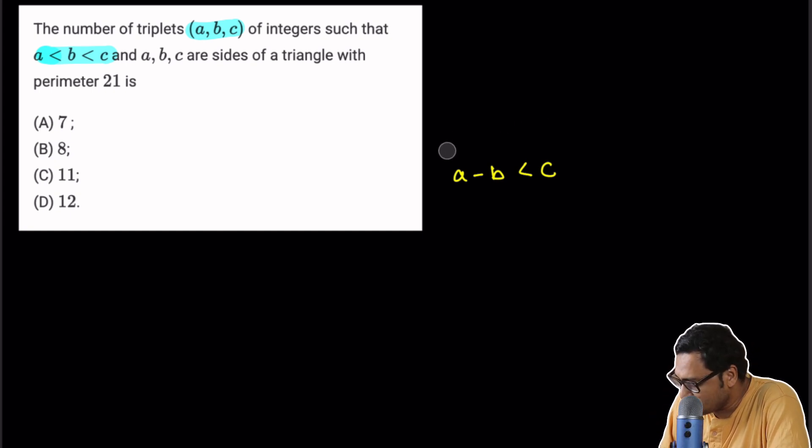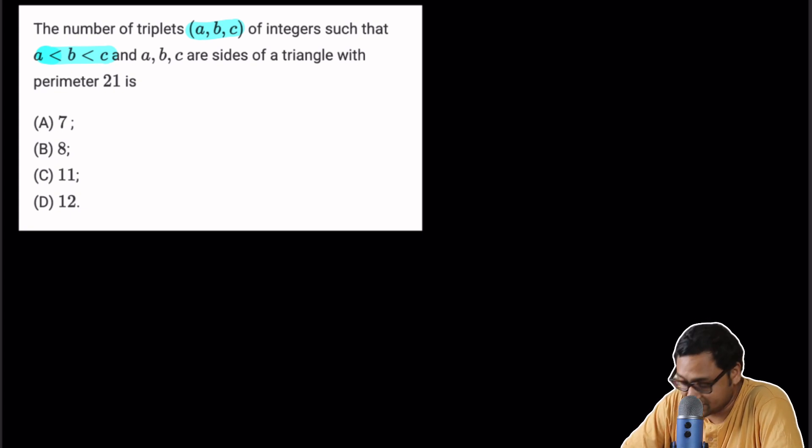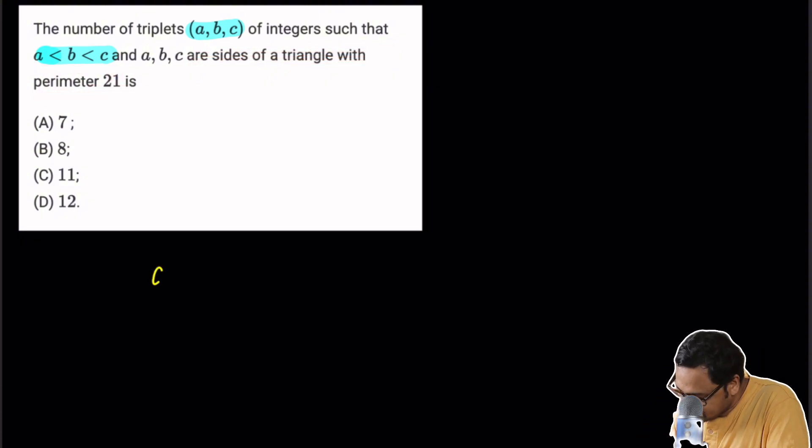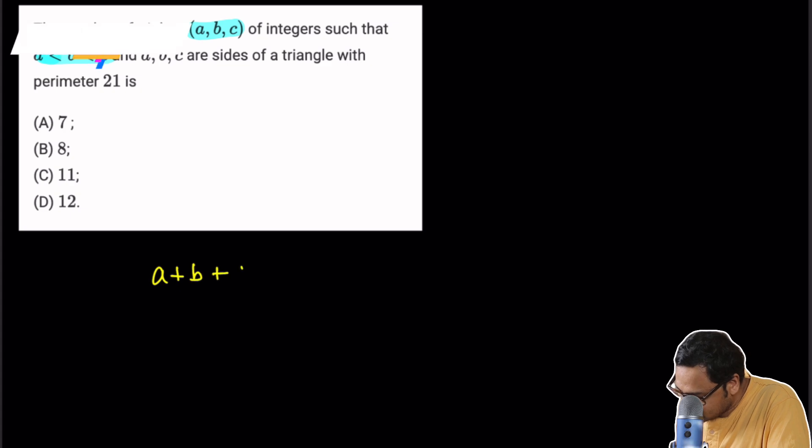We will be solving one such problem from ISI B-STAT B-MAT entrance. This problem says that how many triples are there, ABC, such that A is less than B is less than C, such that ABC are sides of a triangle with perimeter 21. So A plus B plus C is 21. That's given. It's also given that A is less than B is less than C.